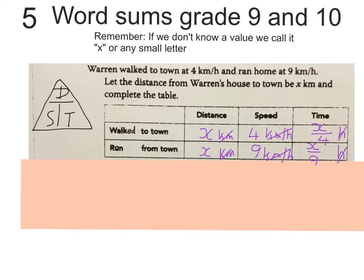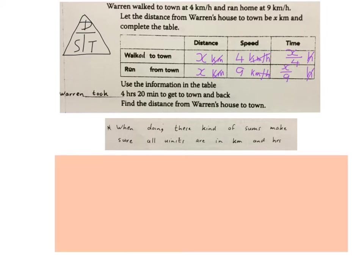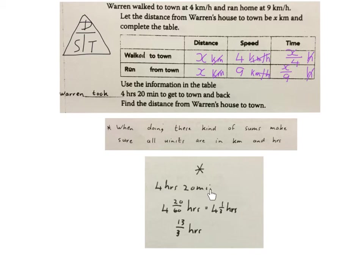Remember that our time has to be in hours because we're working in kilometers per hour and kilometers. Now using all the information built up in this table, I'm going to set up a sum. They said Warren took four hours and twenty minutes to get to town and back — that's the total of all his time. Before we go further, make sure all your units are in kilometers and hours, so anything in minutes we must convert now. I'm going to take the four hours and twenty minutes and convert it to clean hours. I took four hours and twenty minutes, made it into four hours and twenty over sixty hours, then converted this to four hours and a third of an hour, then made this into an improper fraction — thirteen over three hours — so that I can use it in my equation.